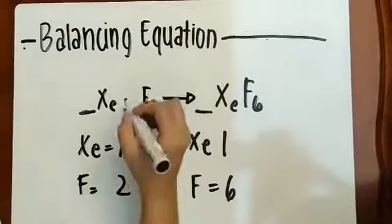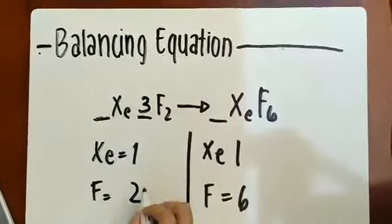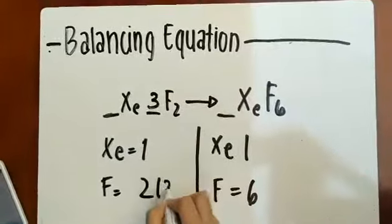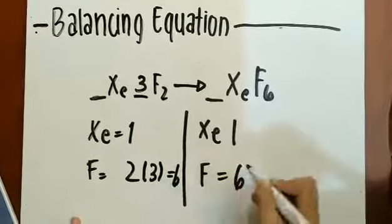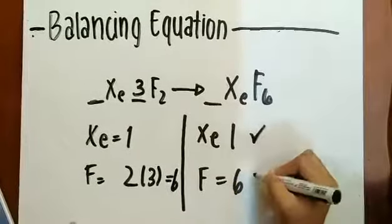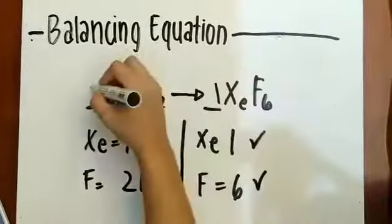Therefore, we have to add 3 for the fluorine to be equal, and the rest are 1.